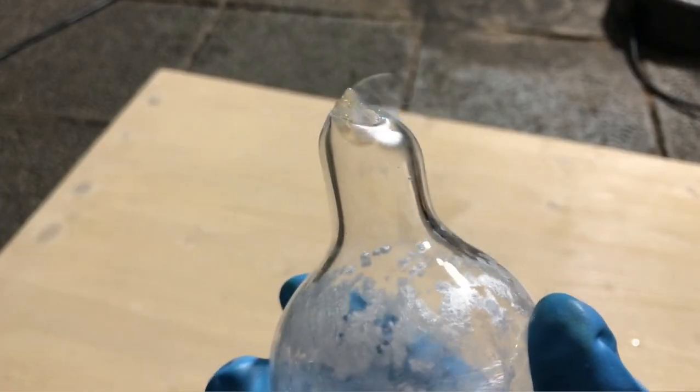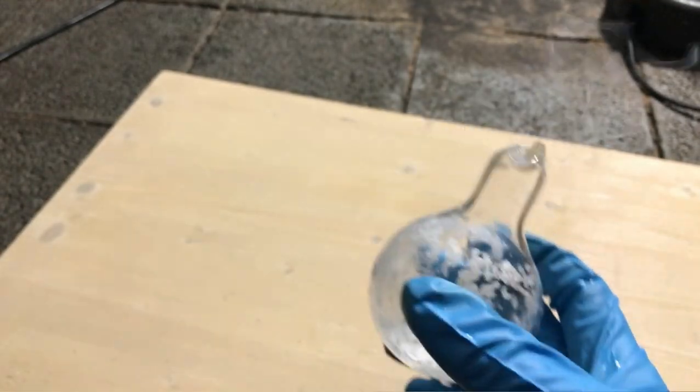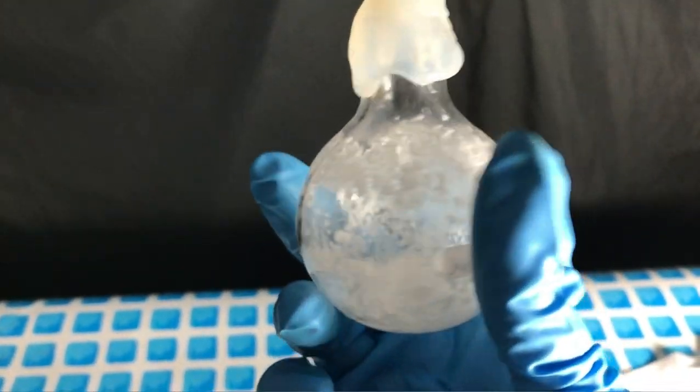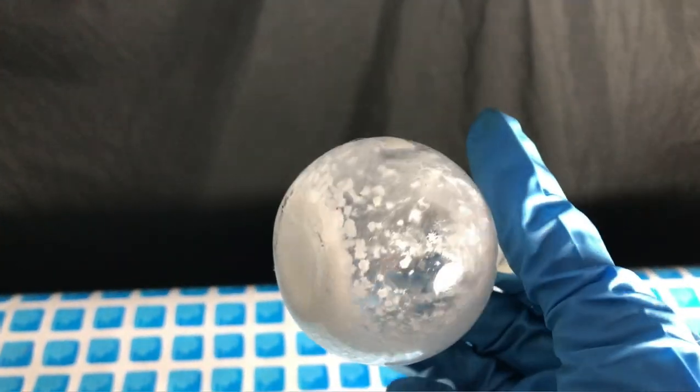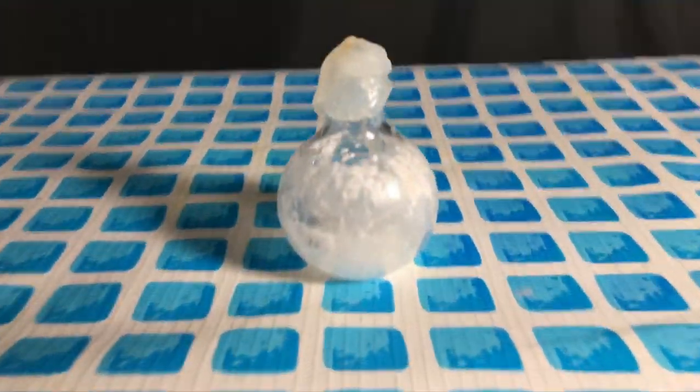To get back to the damaged ampule you can see some vapors escaping. It can obviously not be stored like that. For short term storage, aka a few days, the top was sealed using hot glue. We will have to destroy that sulfur trioxide as quickly as possible and I appreciate any ideas you have. Put them down into the comments and I'll try to do it.